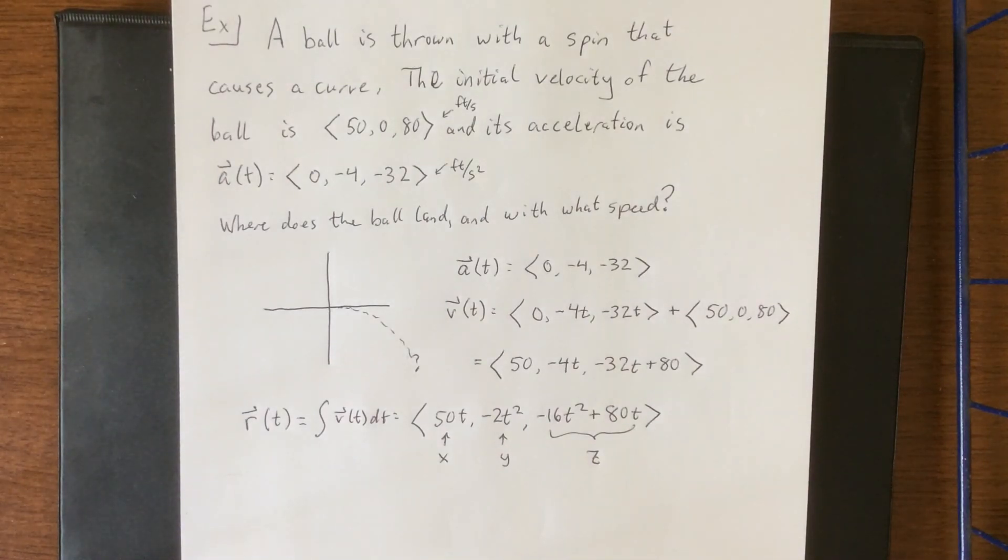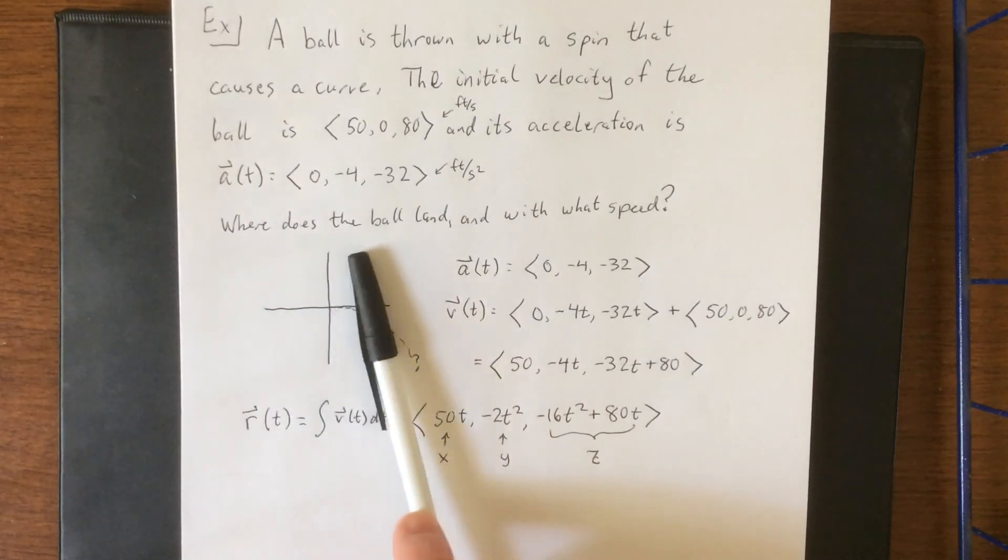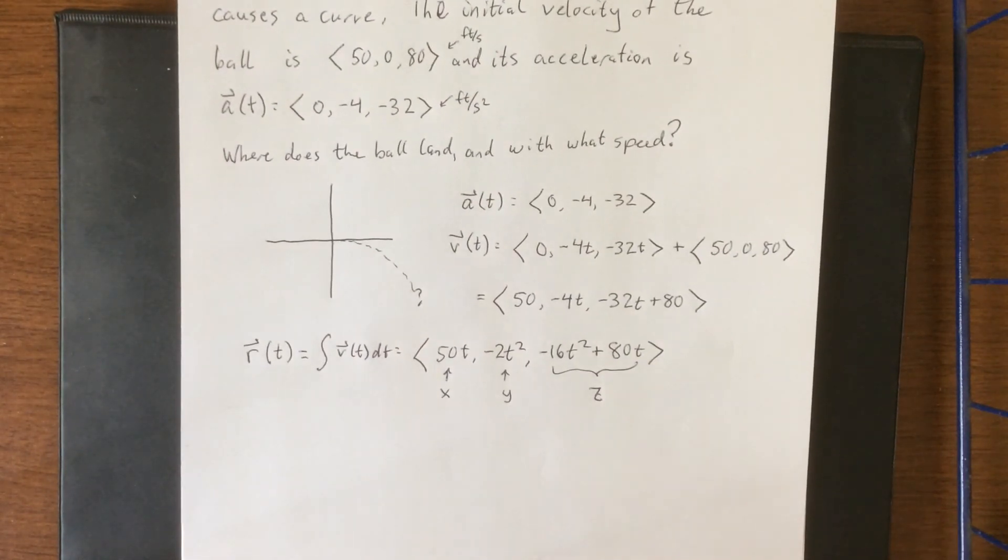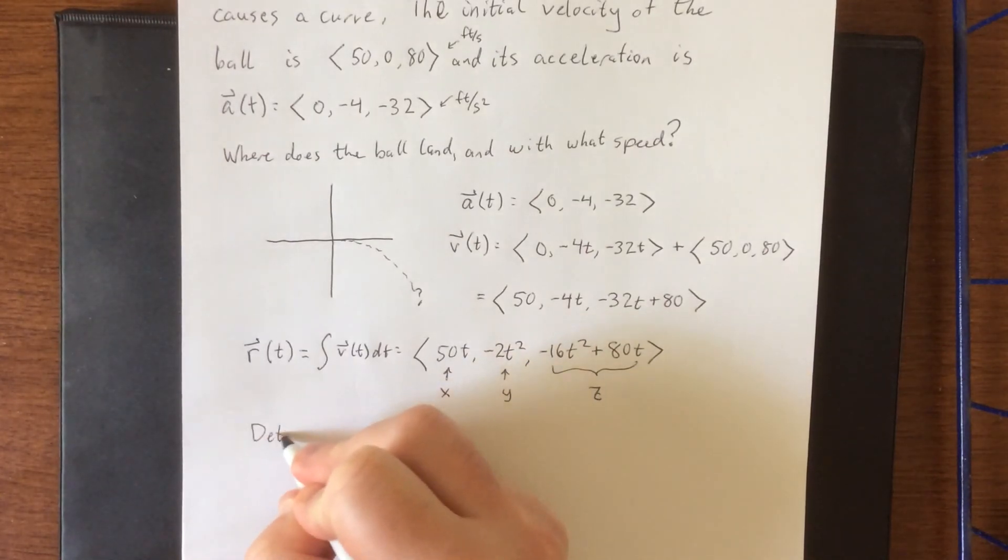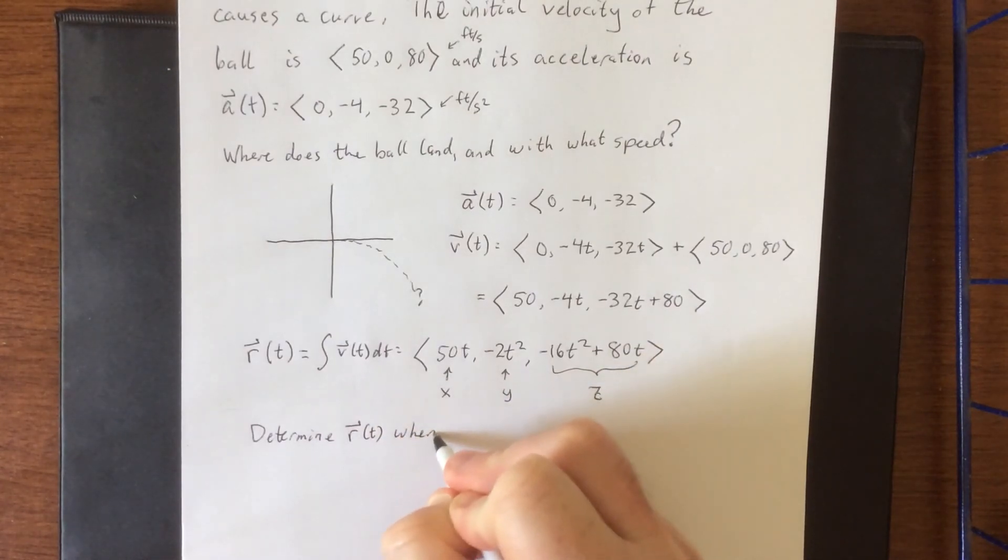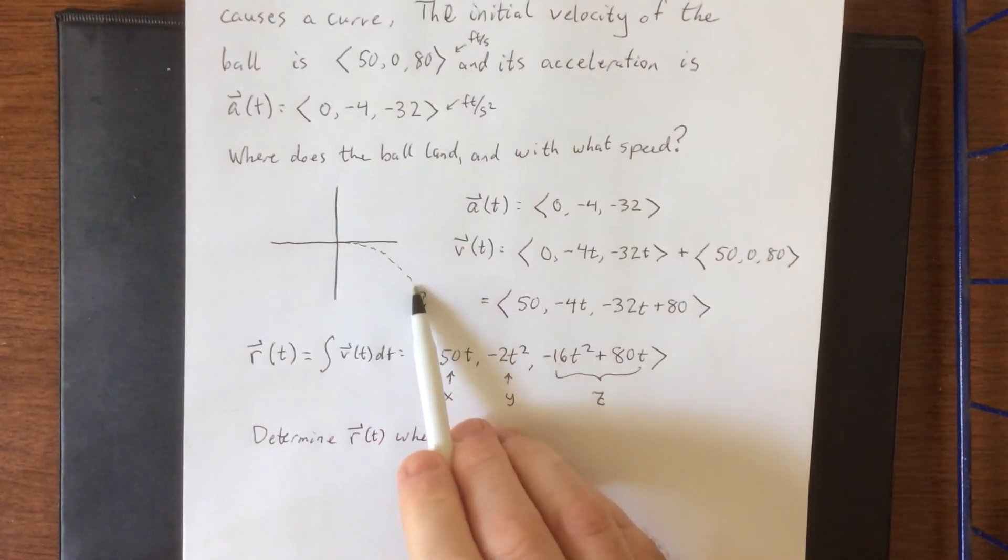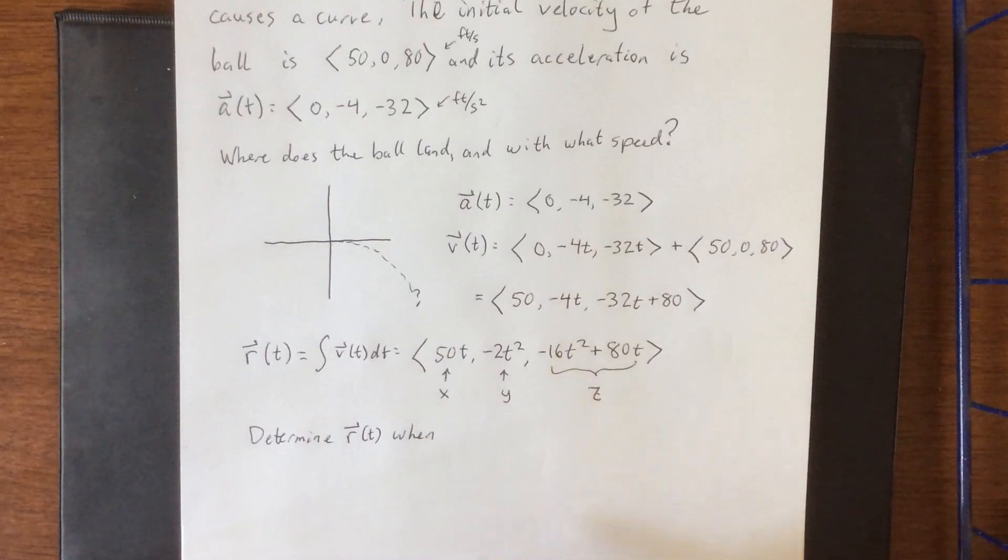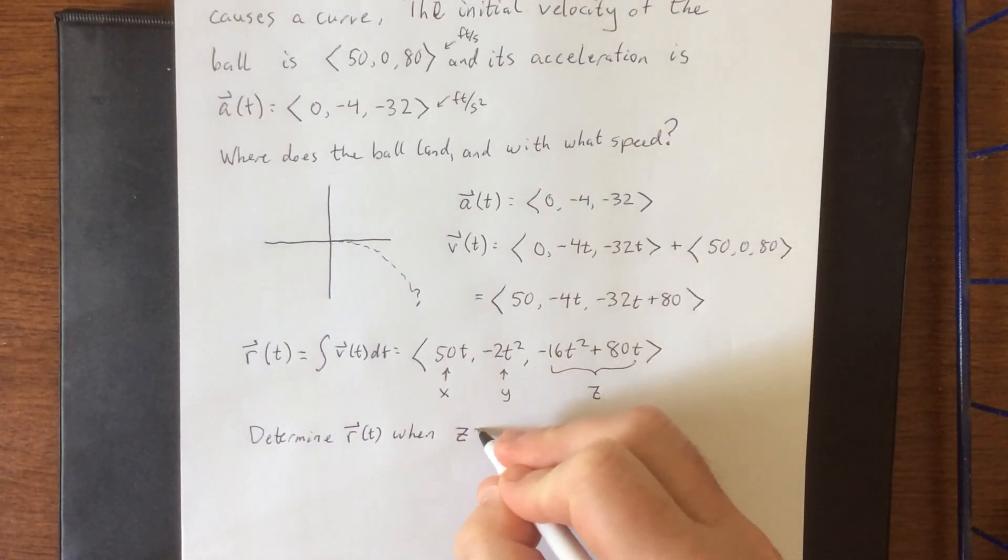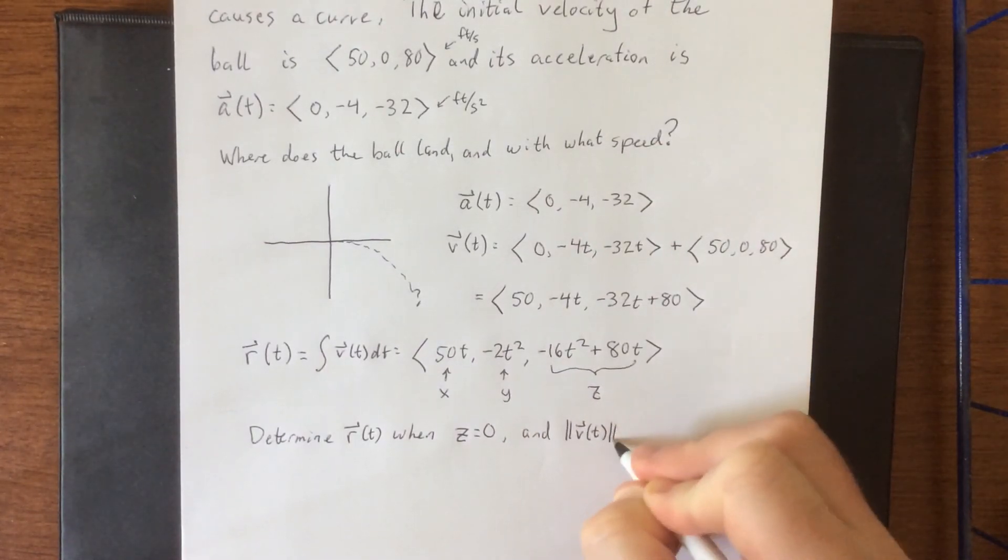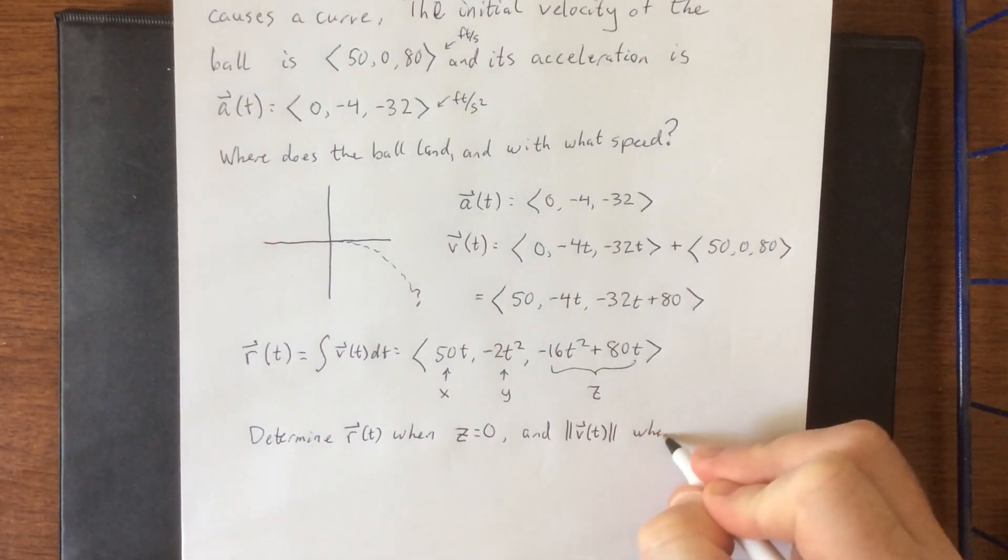Now that we've actually figured out the position function, let's go back to the original problem and say what are we actually trying to figure out here. So the question was where does the ball land and with what speed? We can figure that out as determine r(t) when this thing is going to land. The important thing is it has landed once its height gets back down to zero. So determine r(t) when z equals zero and the magnitude of the velocity vector also when z equals zero.